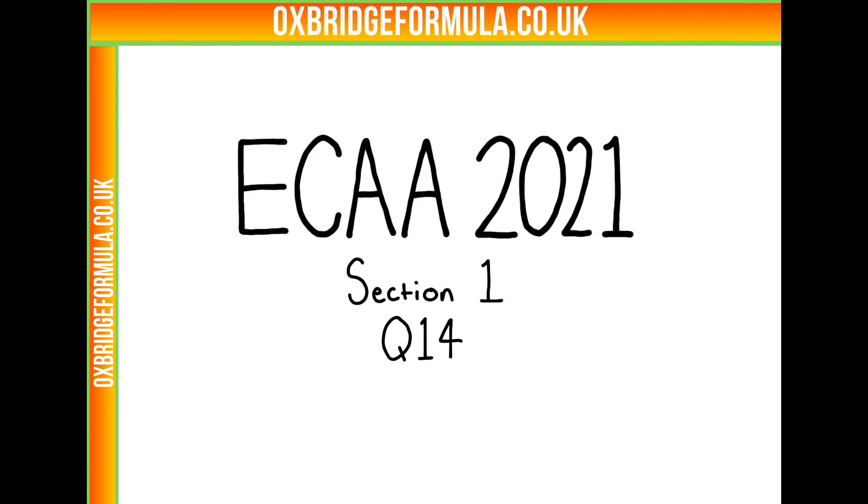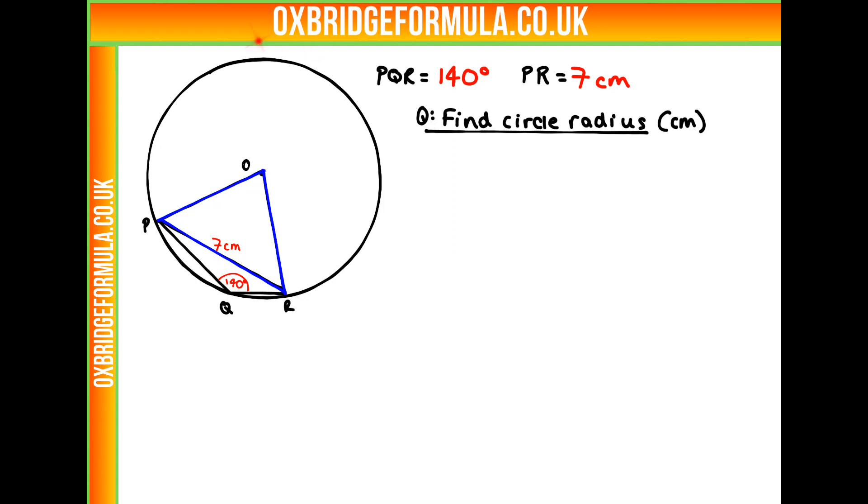This is Eka 2021, section 1, question 14. So we're given a circle here that has two triangles in it. We have OPR, which has a length here of 7 centimetres, and we have PRQ, which has an angle here of 140 degrees. And we have to find out what the circle radius is in centimetres.